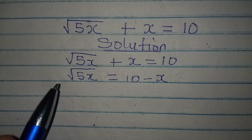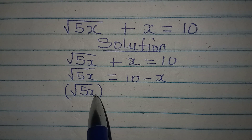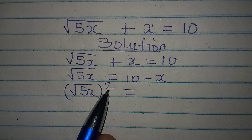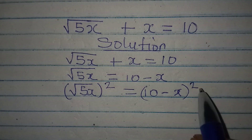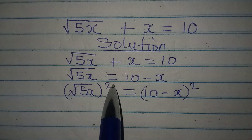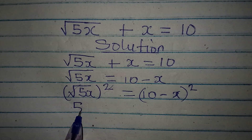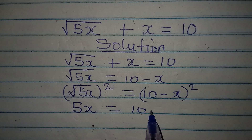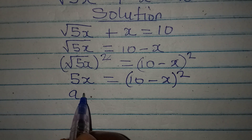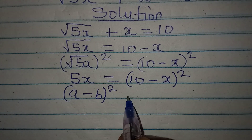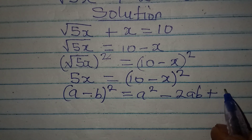The next target is to remove this square root, and we can only do that by squaring it. So we're going to have square root of 5x squared, and since we squared the left side, we also have 10 minus x squared on the right. These cancel, giving us 5x equal to 10 minus x squared. Remember, if you have a minus b squared, this gives a squared minus 2ab plus b squared.